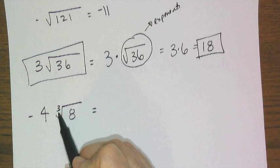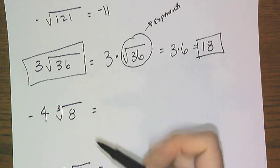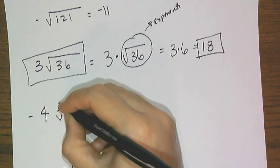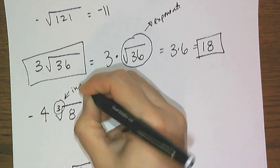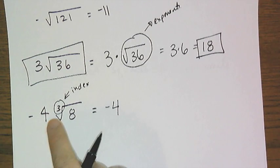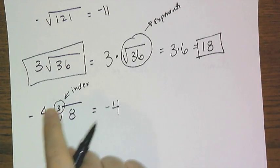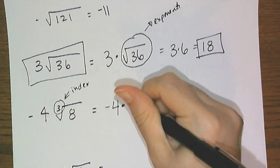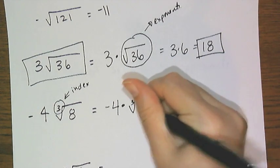And so this next one, I see a negative 4, the little 3 above the check mark, and an 8. Well that little 3 tells me that that is the index of the radical. So I have negative 4, and it's just outside, and whenever you don't see an operation outside of something like that, it means multiplication, the cube root of 8.